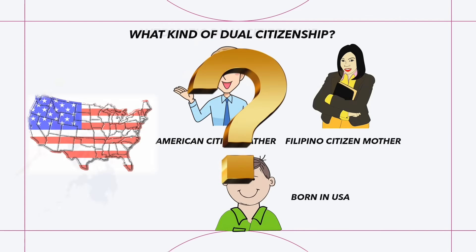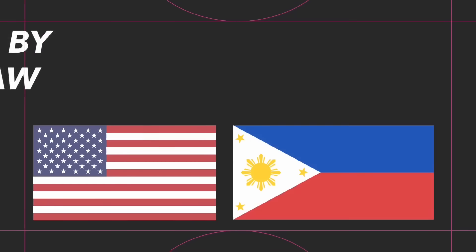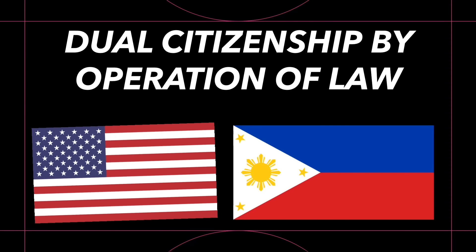For a child born in the U.S. of an American citizen father and a Filipino citizen mother, the child also acquires automatic dual citizenship by operation of law. The parents must register the birth, and the Filipino citizen mother must file a Consular Report of Birth at the Philippine Consulate where the birth took place. The child does not need to apply for dual citizenship — the child can automatically apply for both U.S. and Philippine passports.